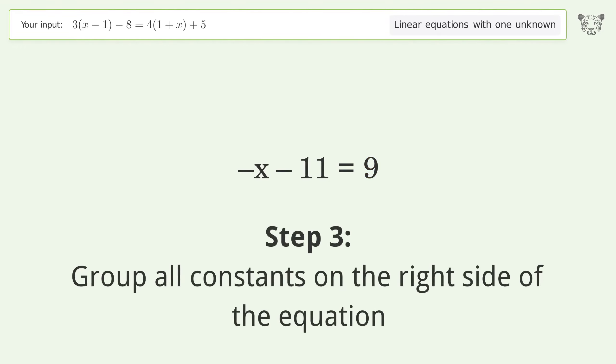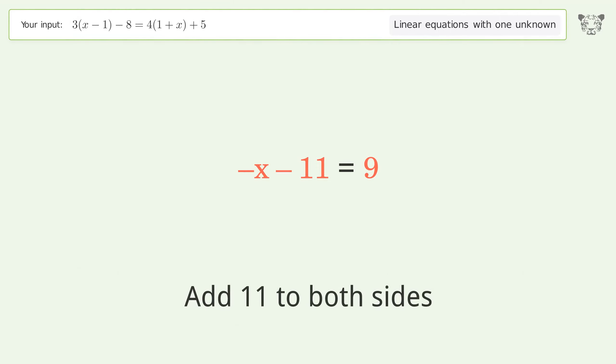Group all constants on the right side of the equation. Add 11 to both sides and simplify the arithmetic.